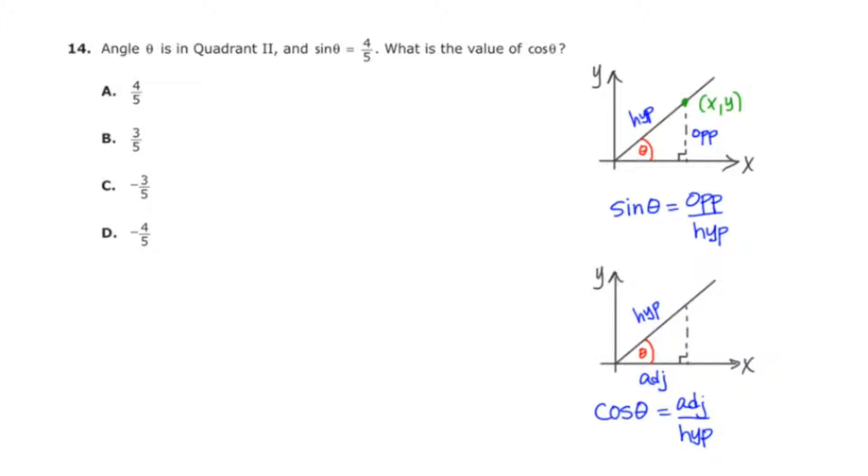And what this point means is that if I start at the origin and I travel along the x axis to where that altitude intersects, that length is called x. And then if I go up that altitude, that height is called y. And then this hypotenuse, we can think of as being r, the radius of what's called the unit circle.